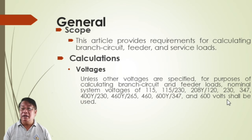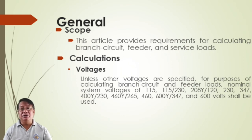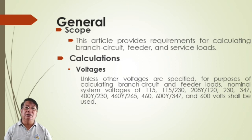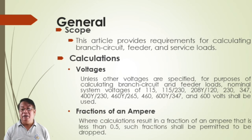We should always coordinate with the local distribution utility because they have their own distribution voltage; otherwise we will have problems energizing our installation or designs. For fractions of an ampere, a fraction of 0.5 shall be permitted to be dropped. For lighting load for specified occupancies, refer to Table 2.20.3.